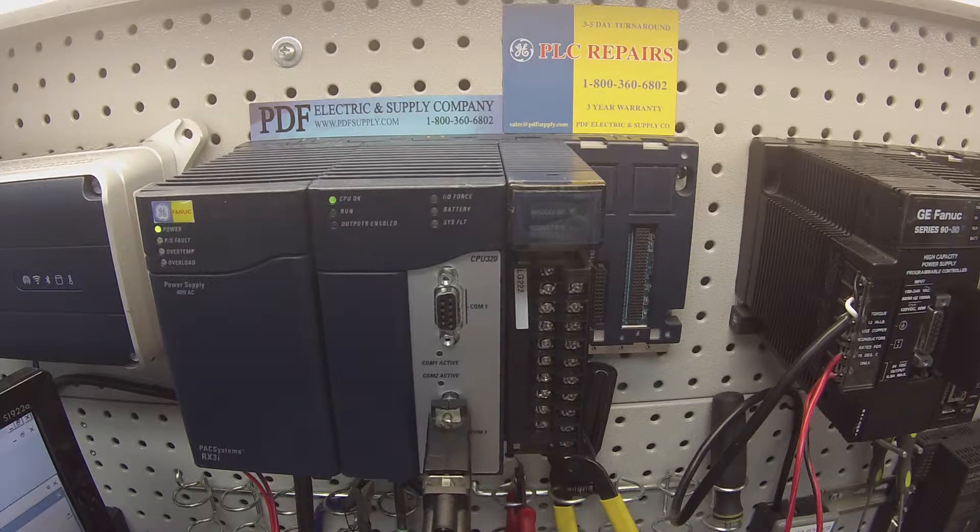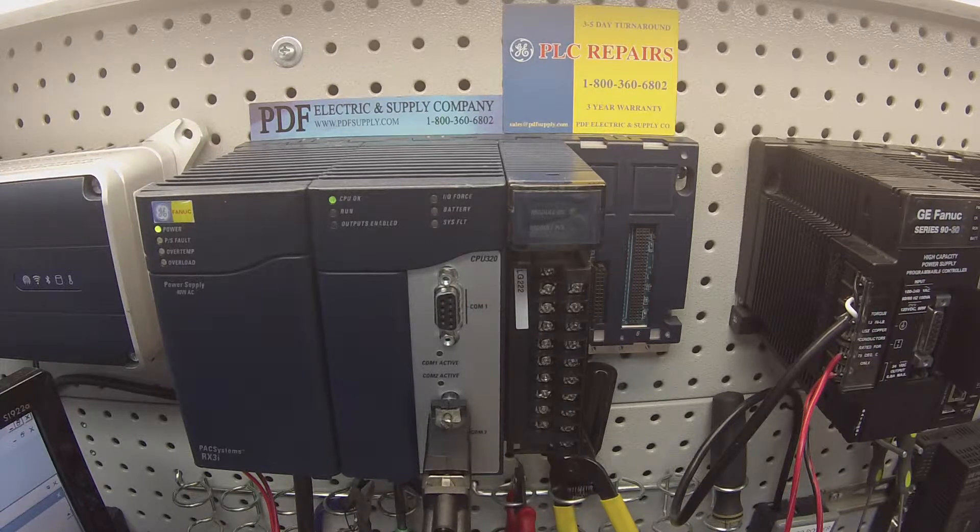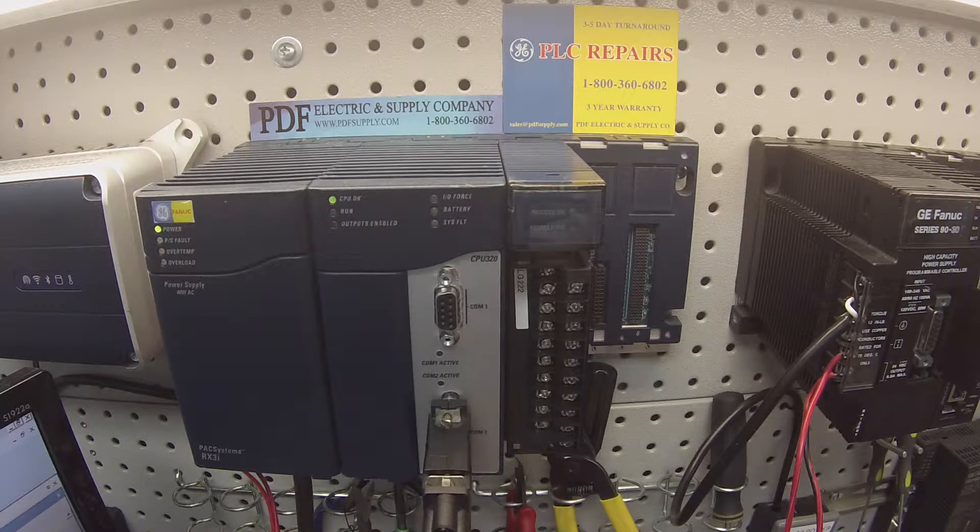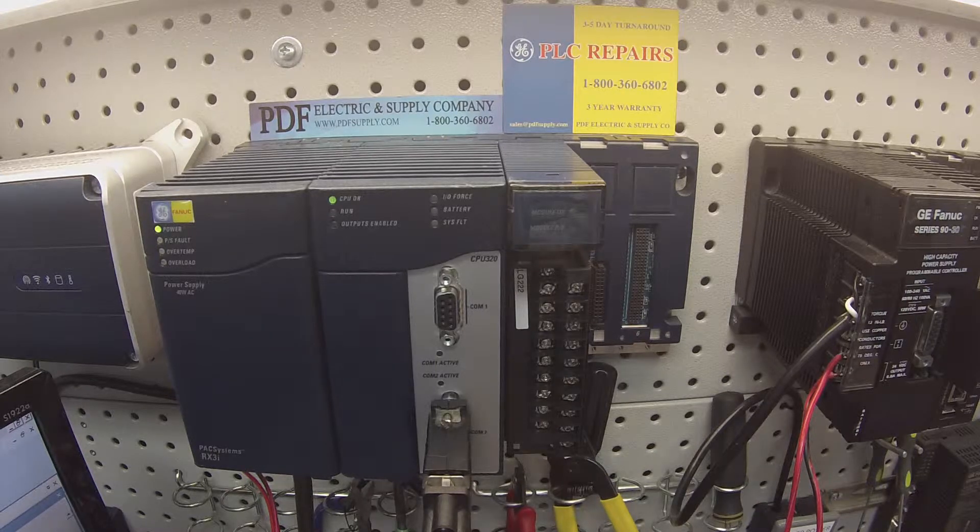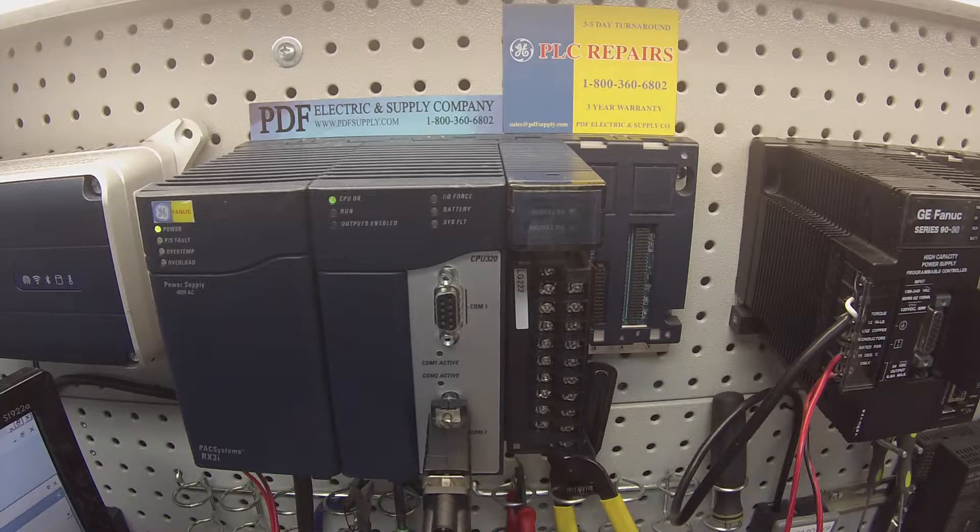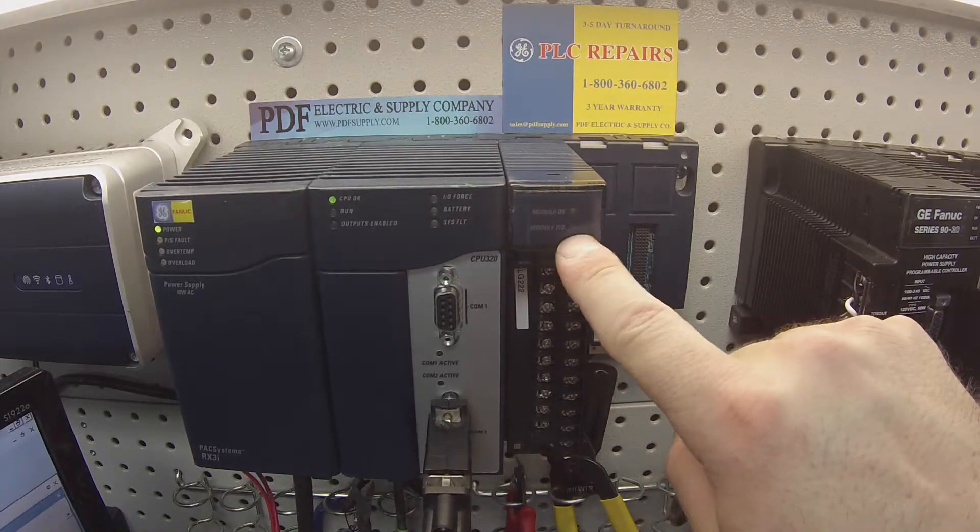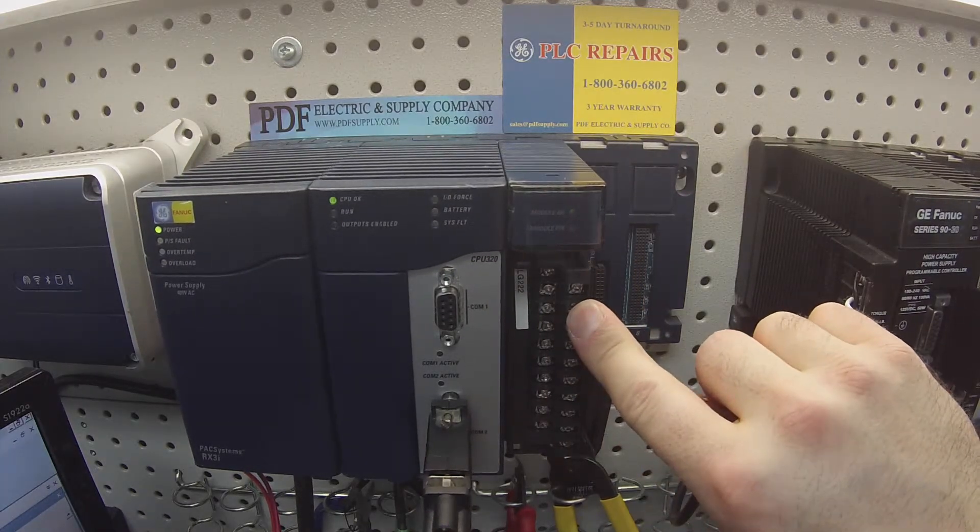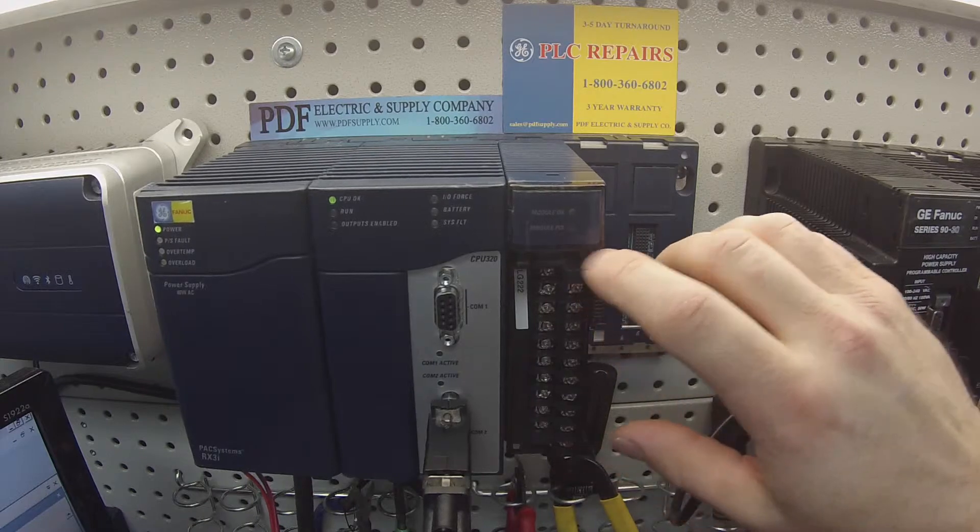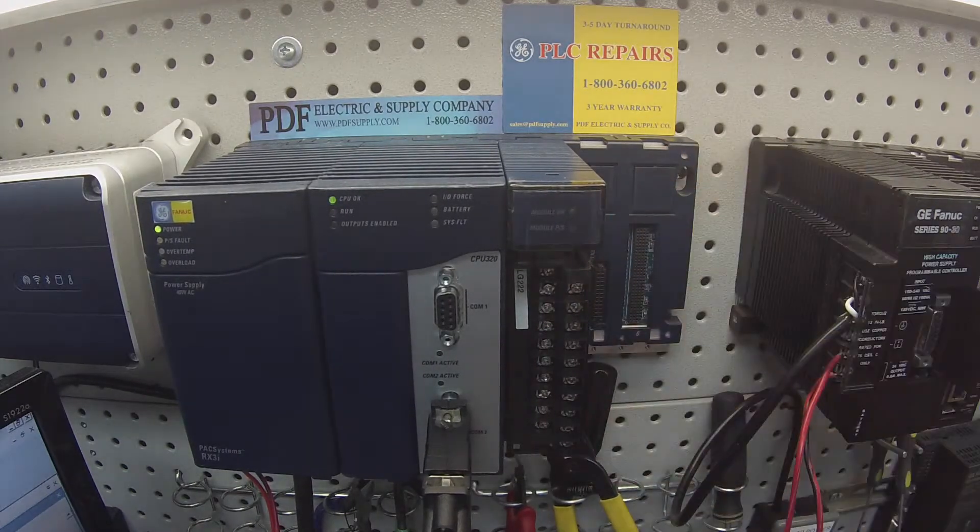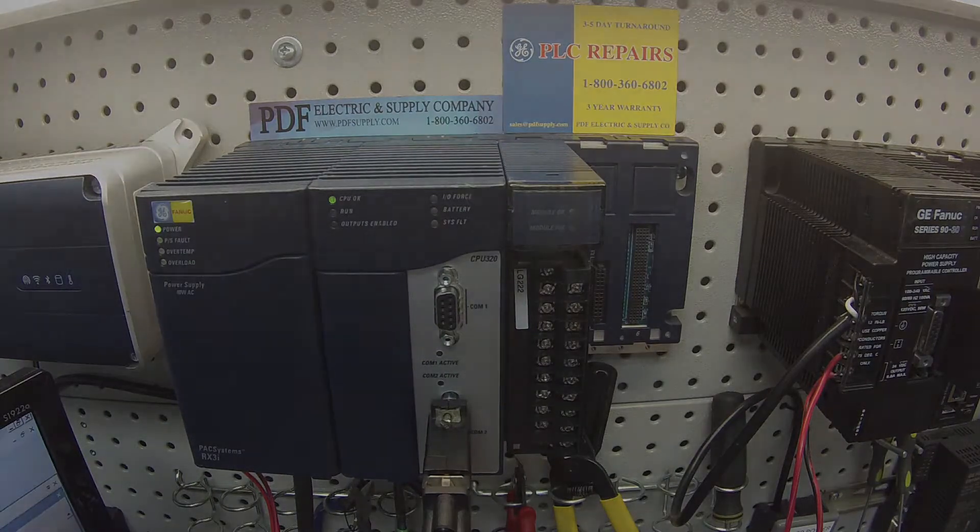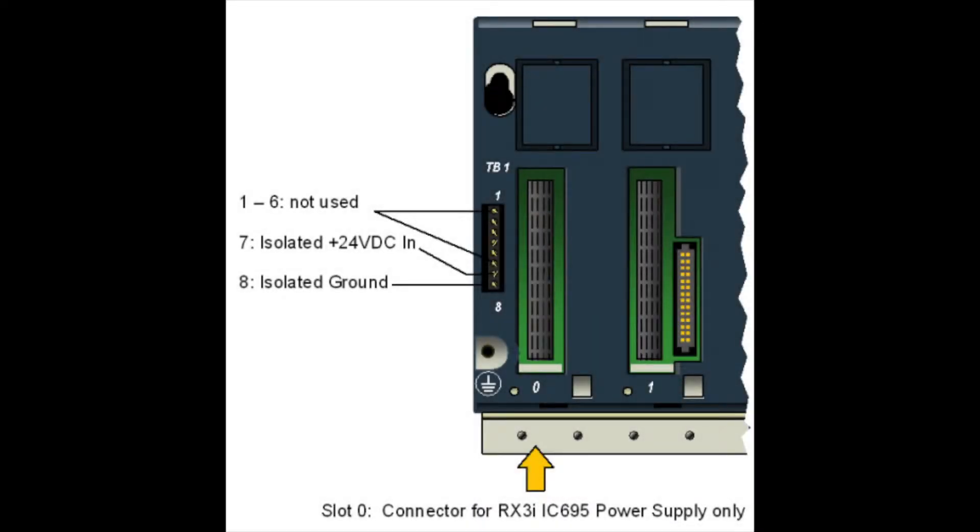I'm using an IC695CHS007 7-slot rack. You can use a 012 12-slot rack or a 016 16-slot rack, whichever you choose. You need to know that this other LED, the module power supply that powers this individual unit, needs to come from an outside source and be connected to the rack. You must have this in order to do this test.